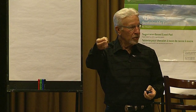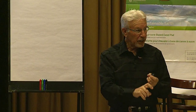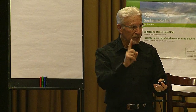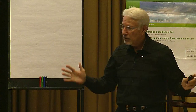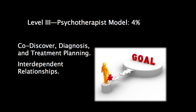Level one and level two are more alike; level three is distinctly different. It's marketed differently, there are different kinds of people in it, different procedures, a different office size and environment — it doesn't even look like a level one or two. There's more co-discovery, co-diagnosis, and treatment planning. You can only coach people when they have a goal.